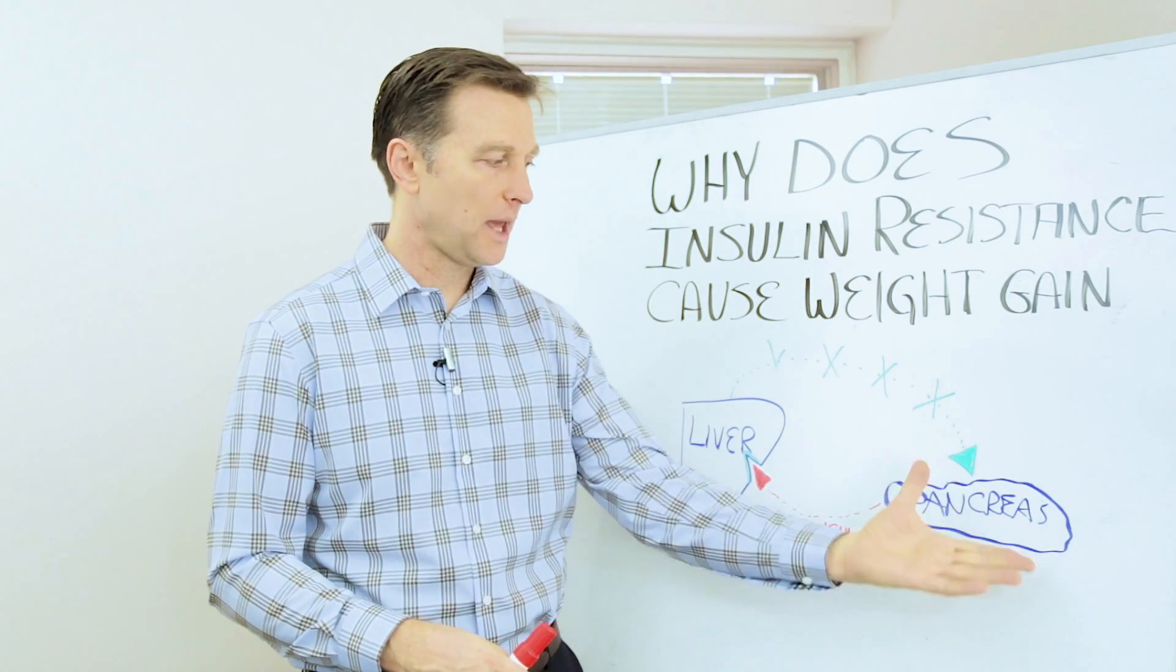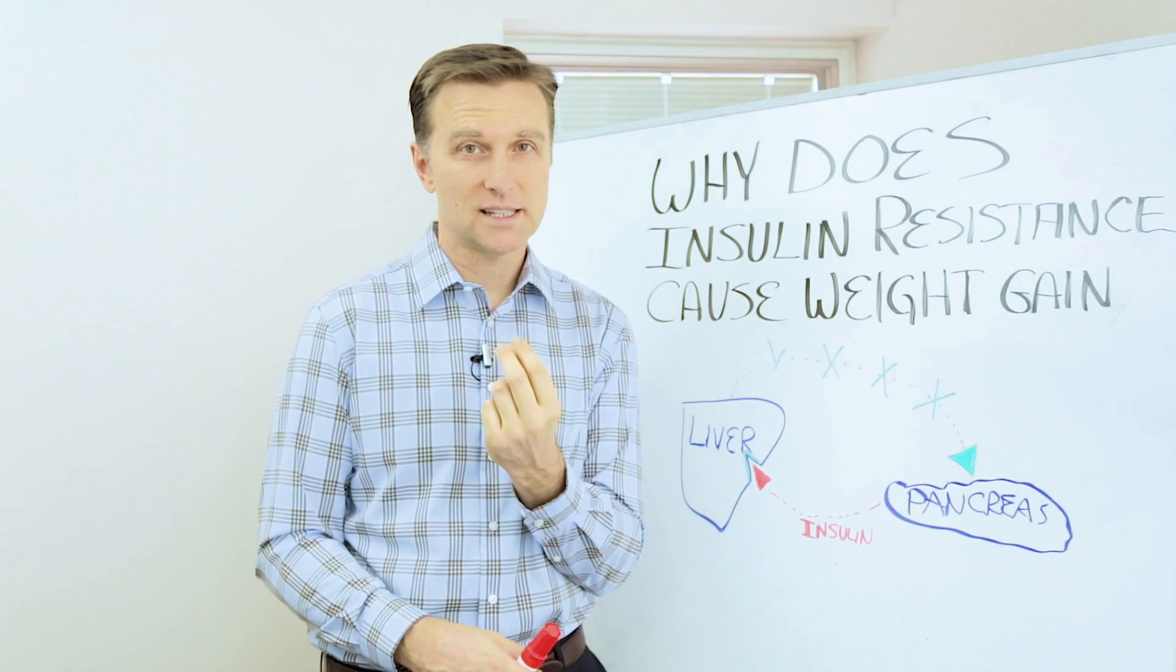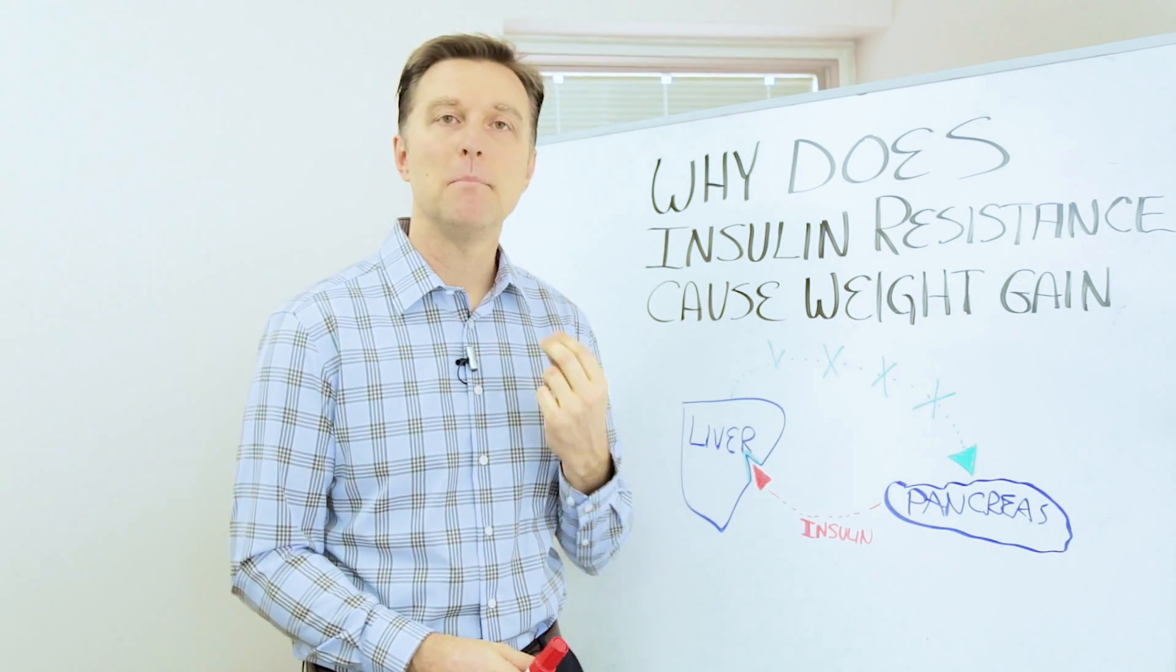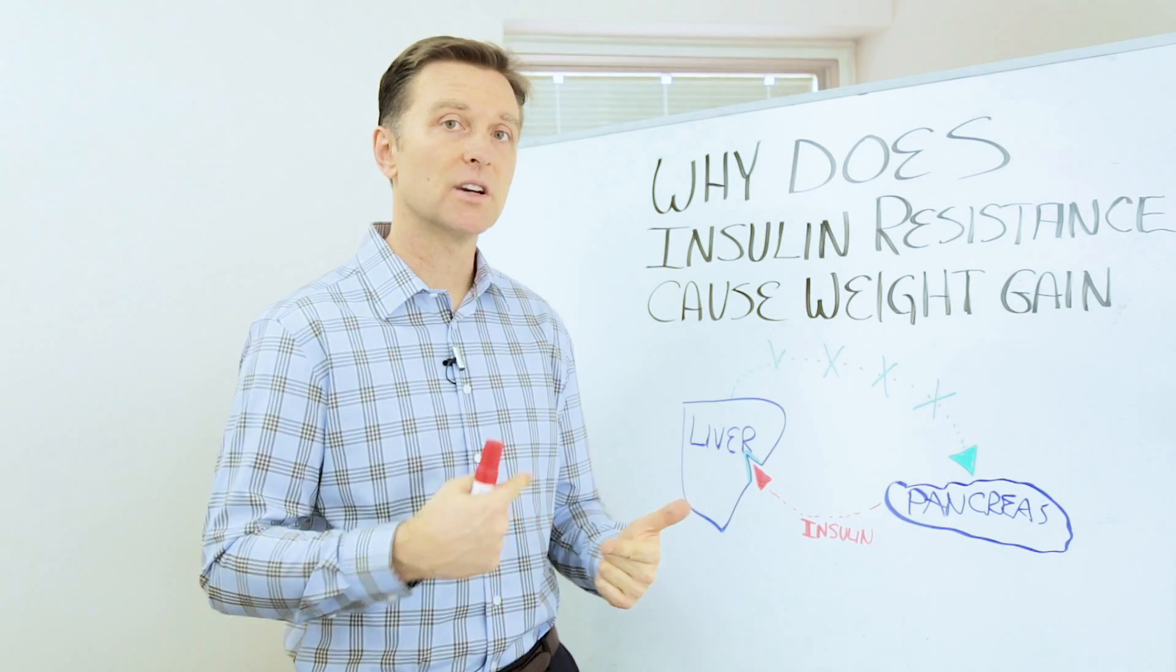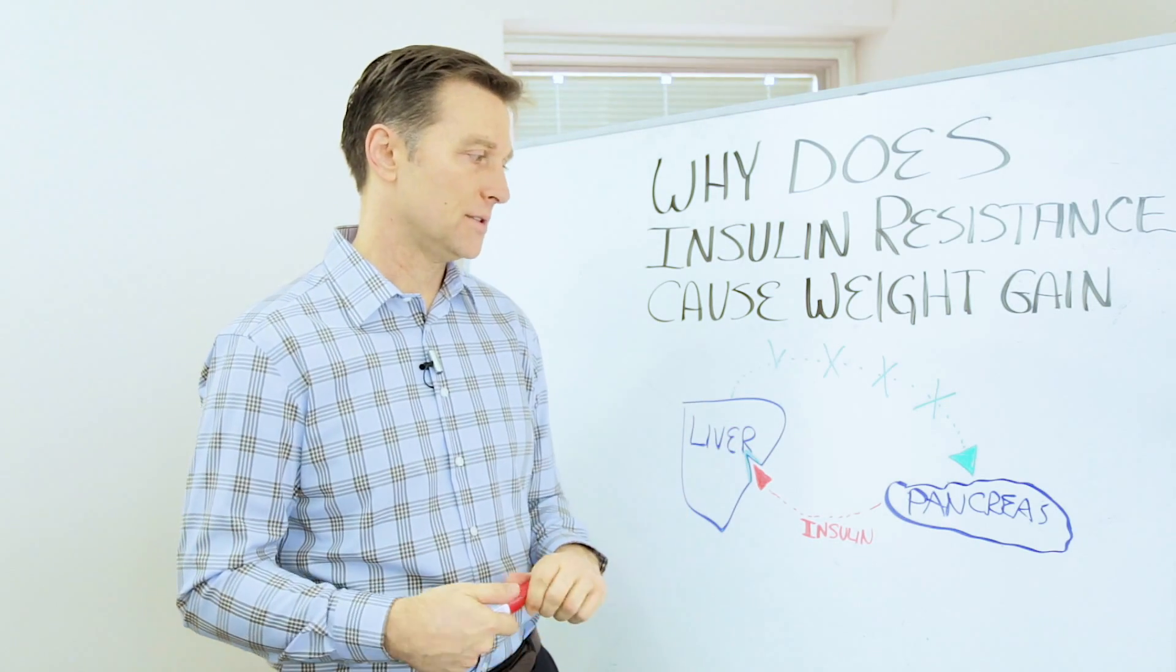Well, we have this thing called the pancreas. The pancreas makes this hormone called insulin. Insulin has a message to store fat. In the presence of insulin, you're going to make a lot of fat. That's one of the functions.